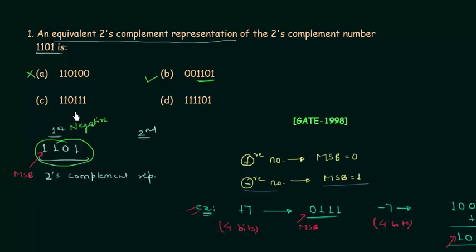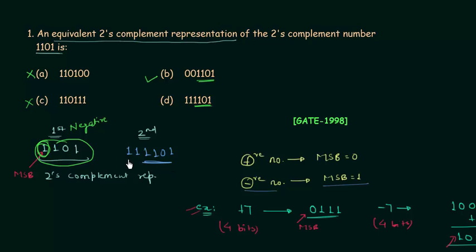In option C we don't have 1101 — we have 011, so option C is also incorrect. In the last option D we also have 1101. Now we check the repetition of sign bits. The sign bit of 1101 is 1. In option B there is a repetition of 0, and 0 is not the sign bit, so option B is incorrect. In option D there is a repetition of 1, and 1 is the sign bit, so option D is correct.